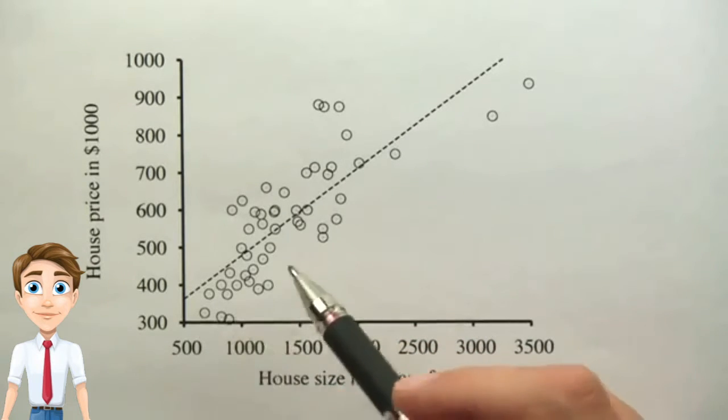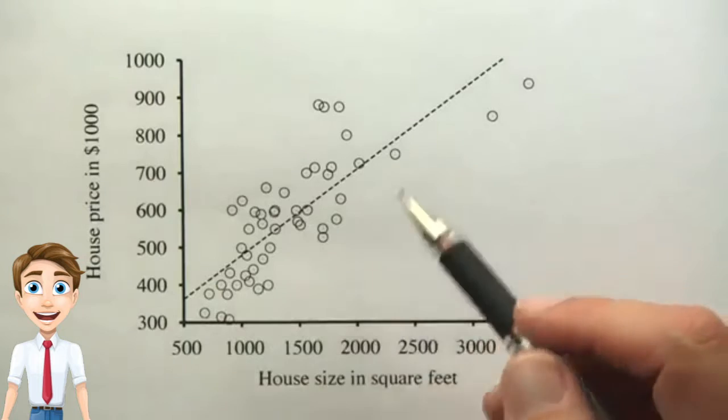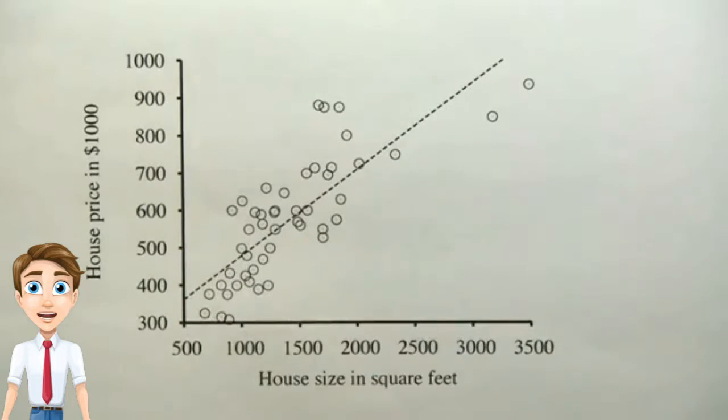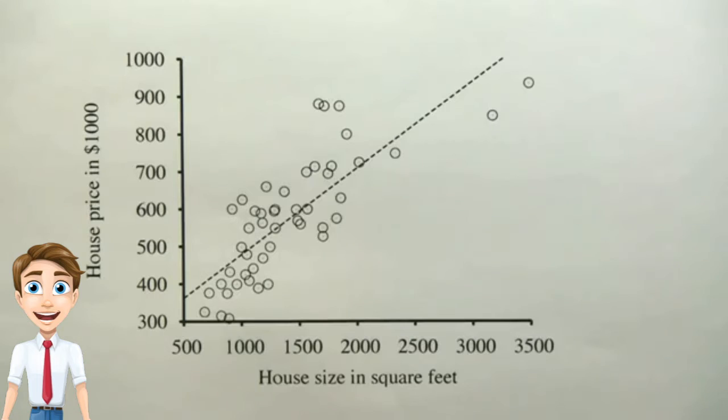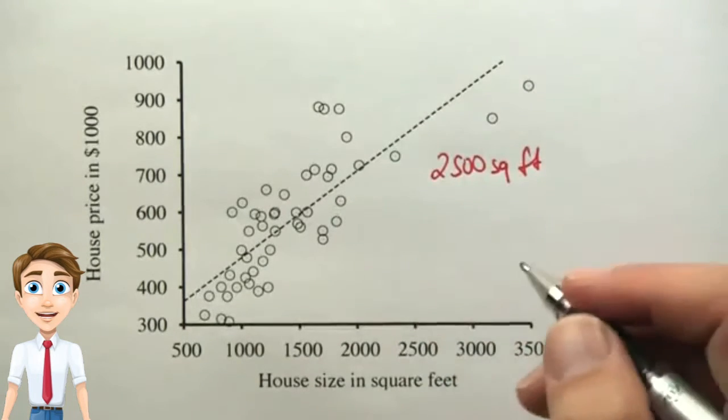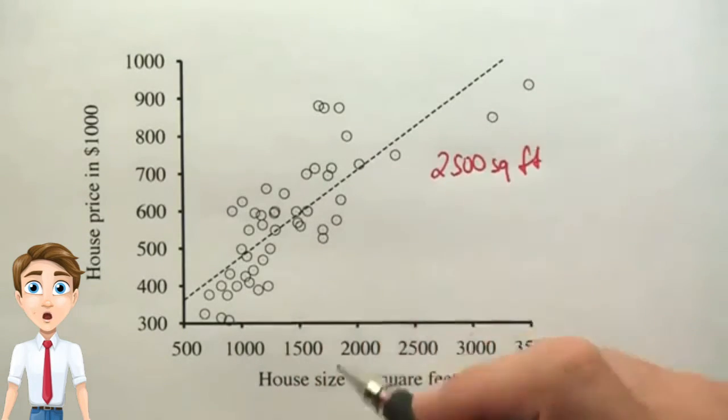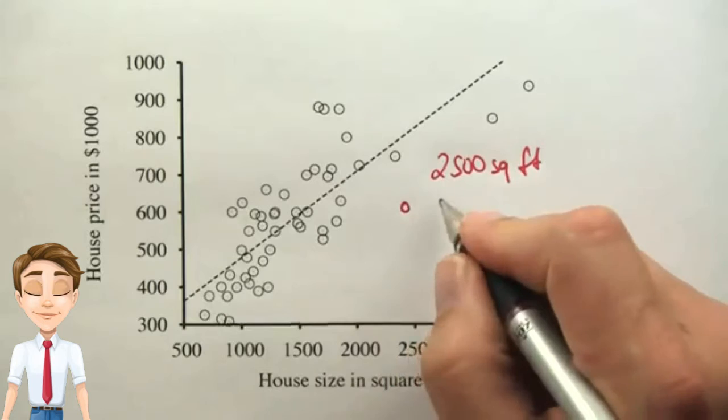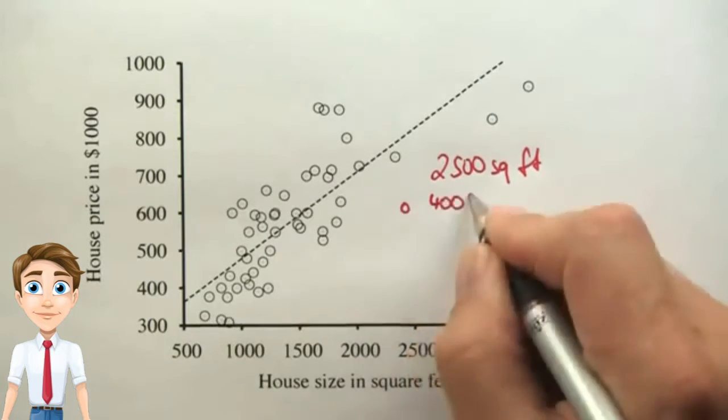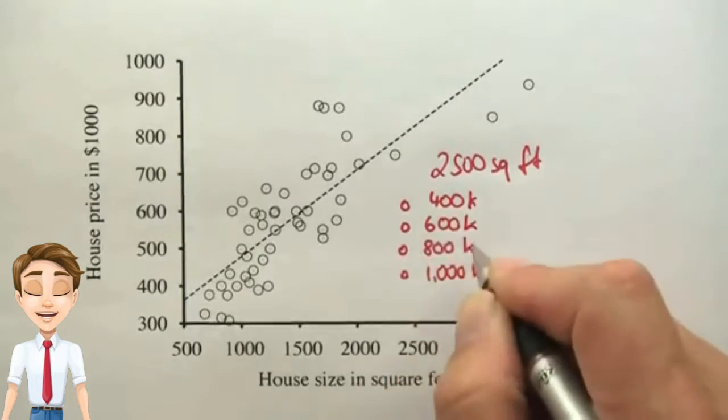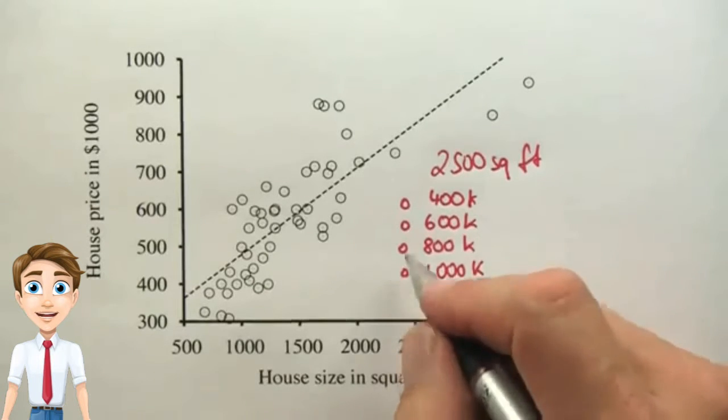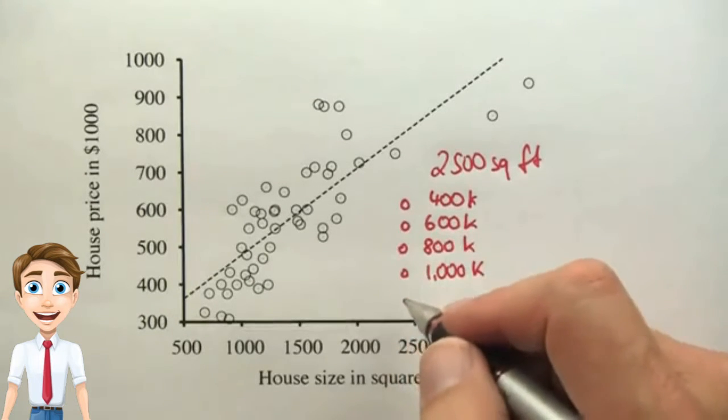And as you can see, roughly speaking, as the size of the house goes up, so does the sales price. I wonder, for a house of about 2,500 square feet, what is the approximate sales price you would assume based just on this scatter plot data? Is it 400k, 600k, 800k, or 1000k? Pick the one that looks most plausible.